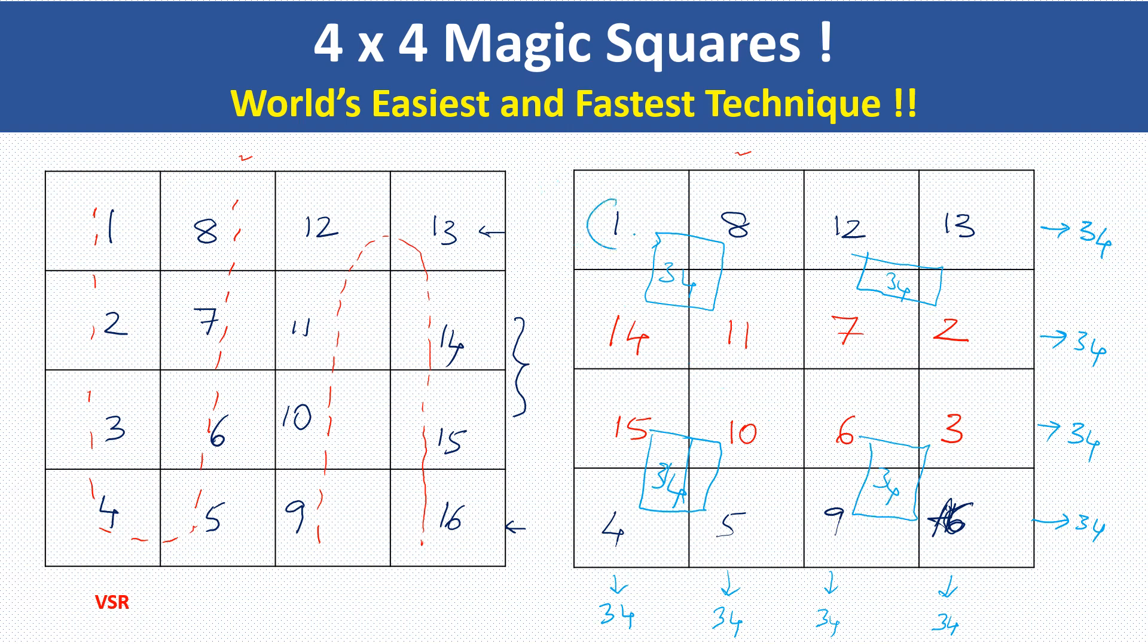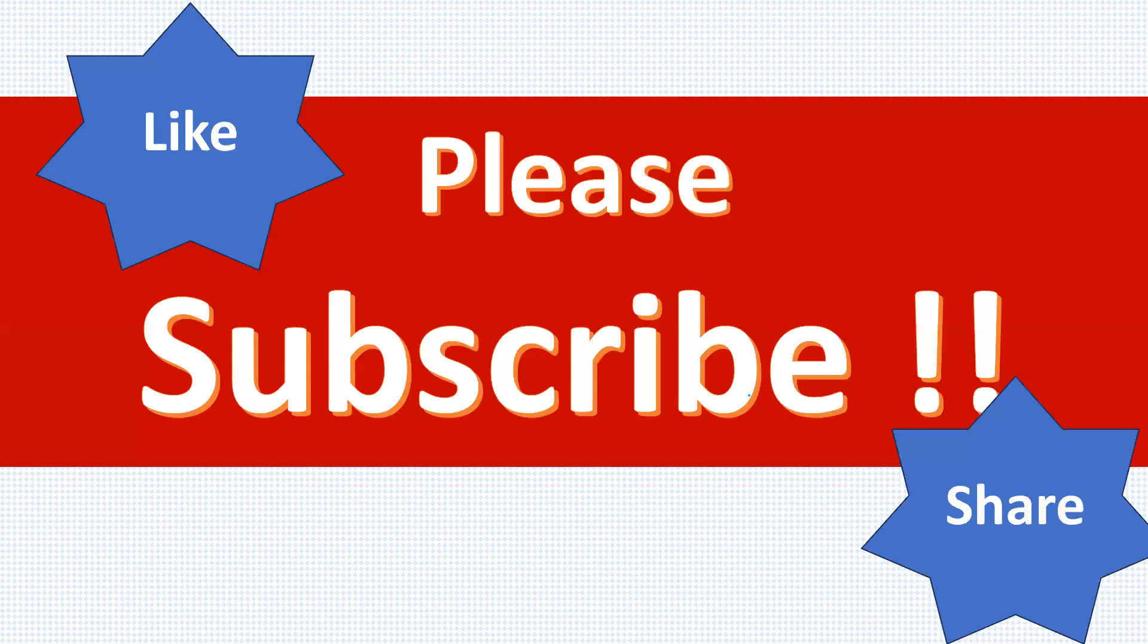And not only that, you see this 1 plus 16 plus 4 plus 13 is nothing but 34. At the same time, you see this 8, 12 plus 8 is 20, 29 plus 5 is 34. 14 plus 15 is 29, 29 plus 5 is 34 and this also 11 plus 7 plus 10 plus 6 is nothing but 34. Is it not very interesting? Wherever you add, you get 34. And this method is so simple and so easy. That is the beauty of this method.